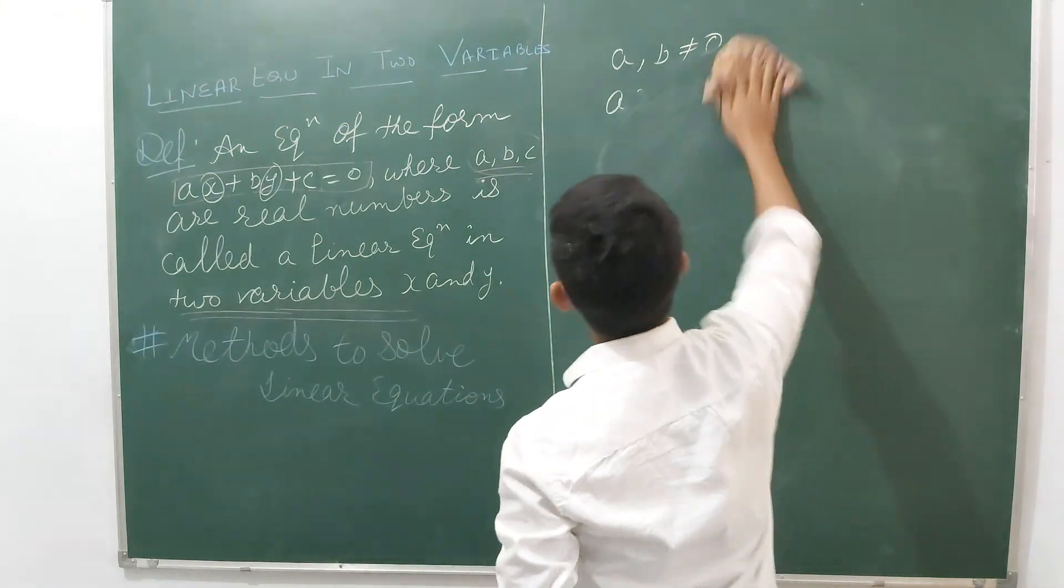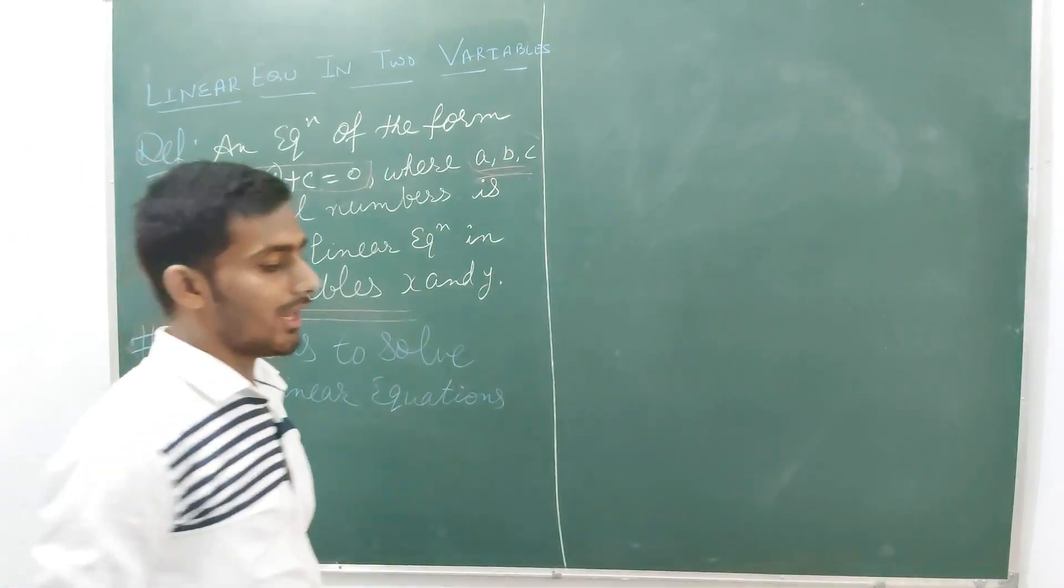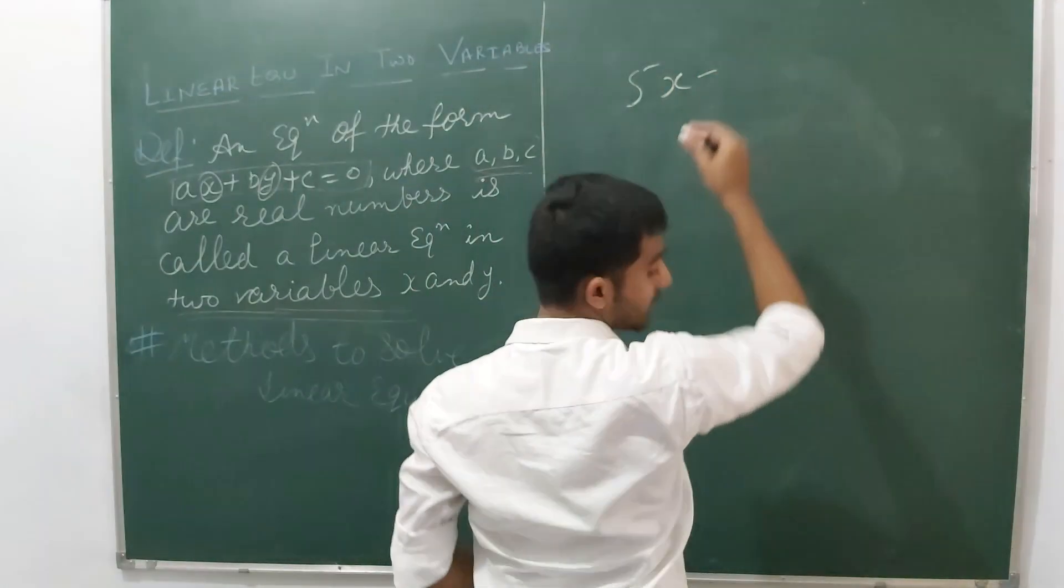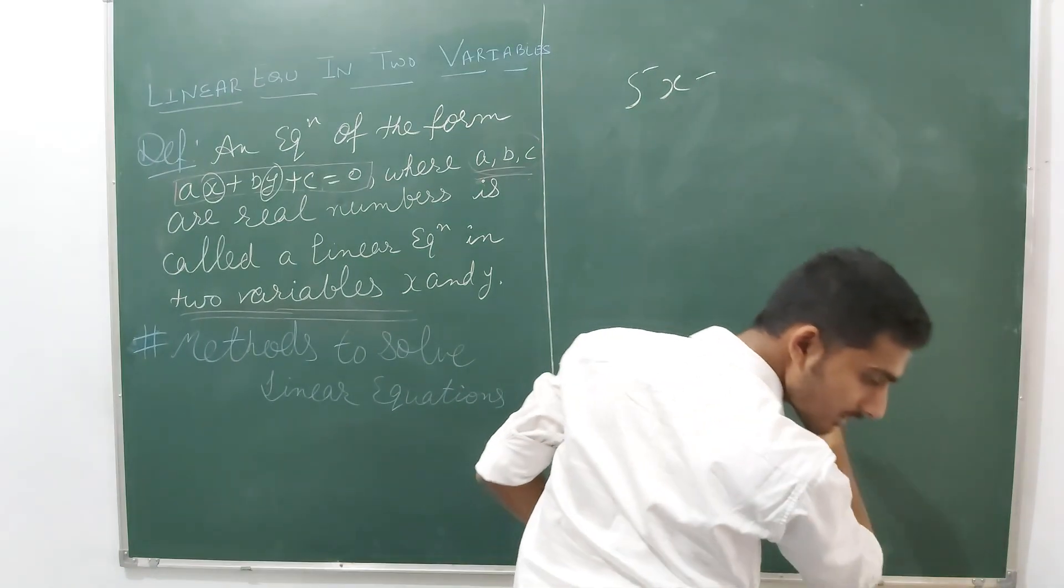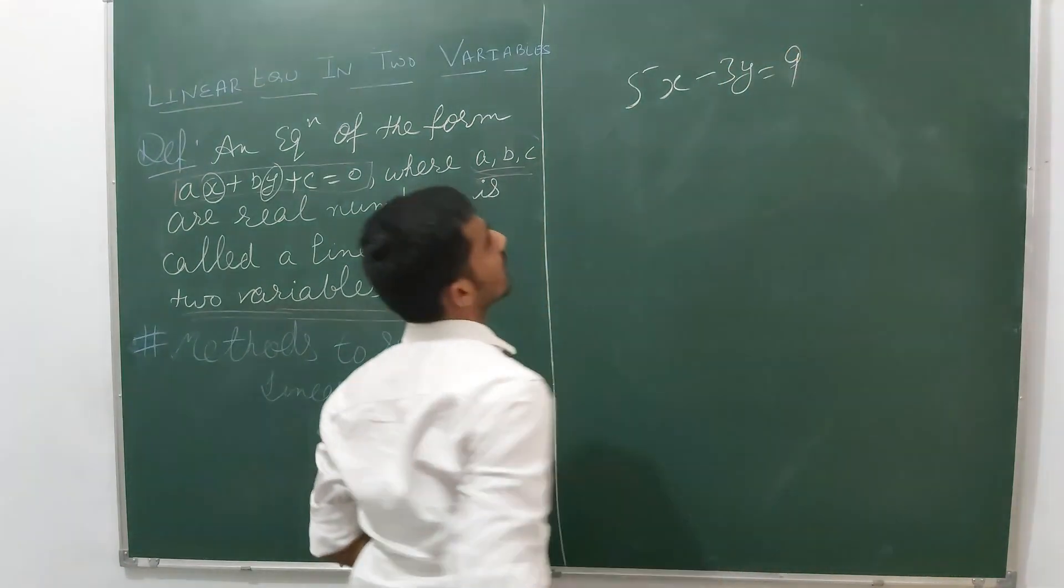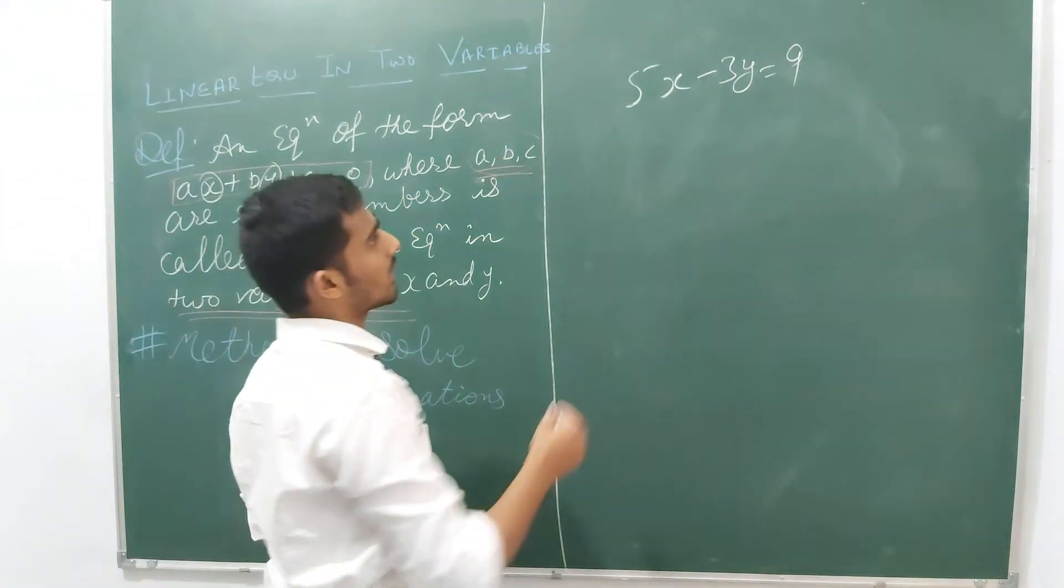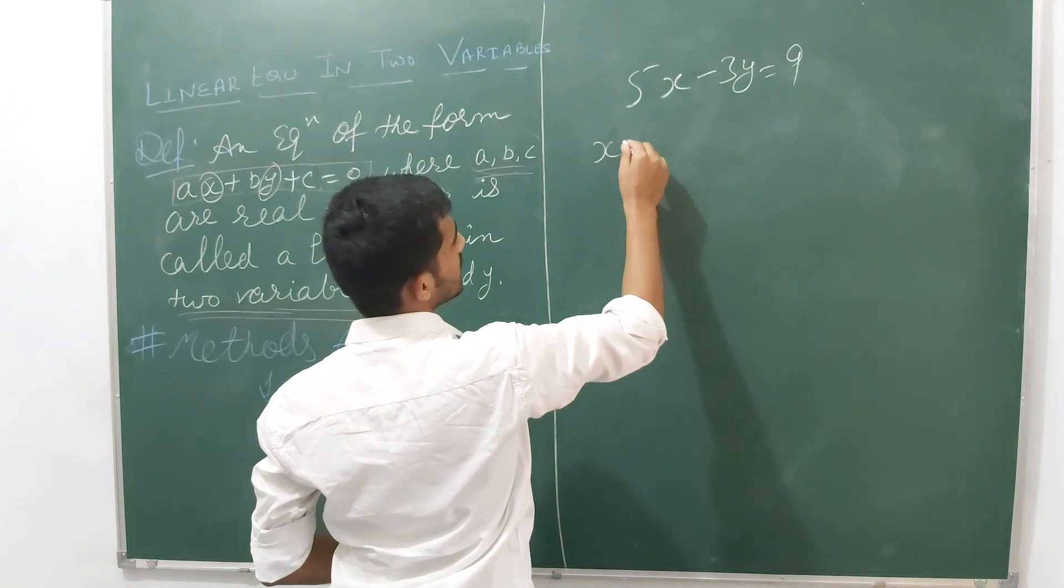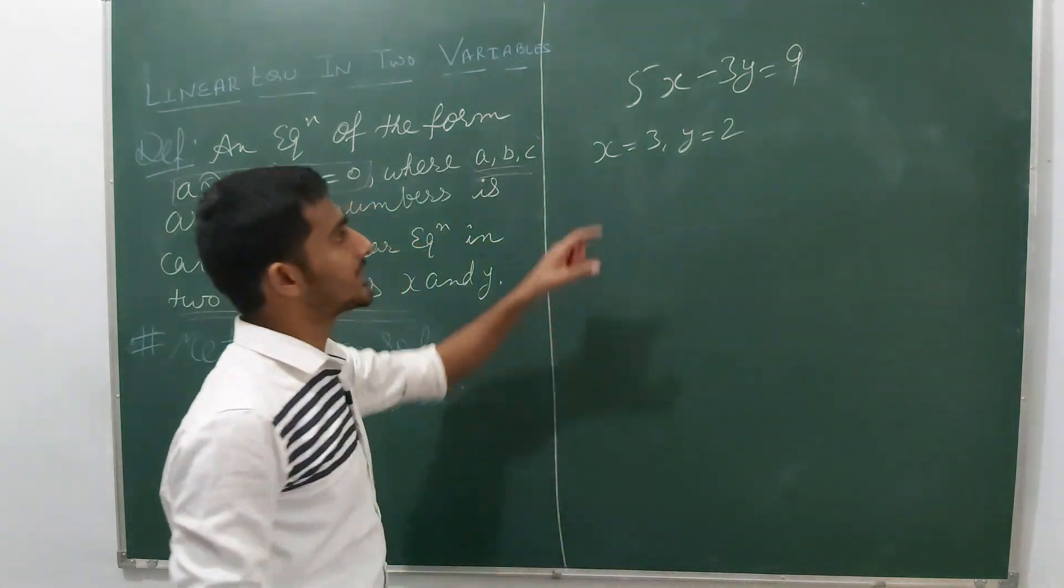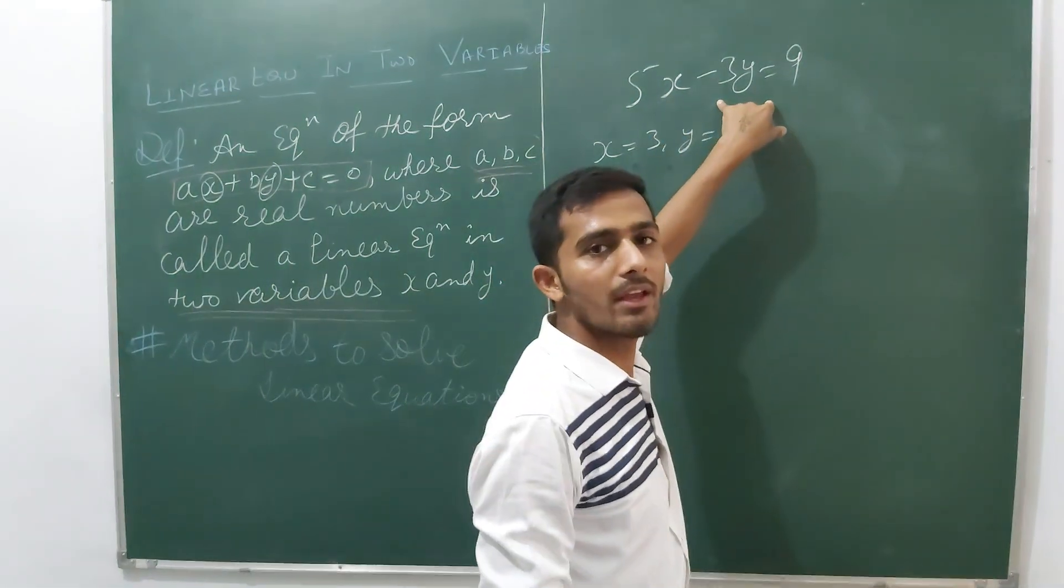Now, in the 9th class, you had equations like 5x minus 3y equals 9. You were given values like x equals 3 and y equals 2, and you had to check that both values are satisfied or not.